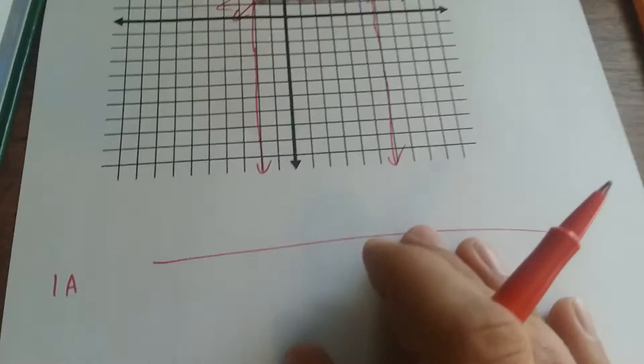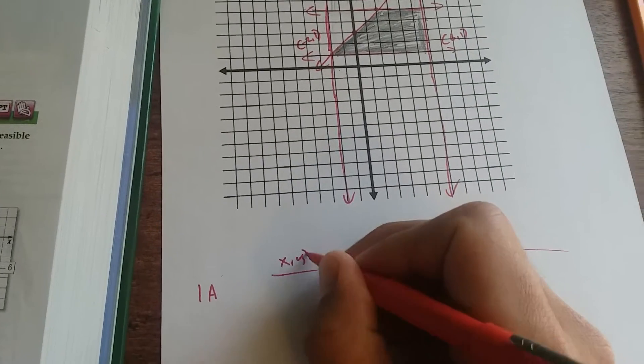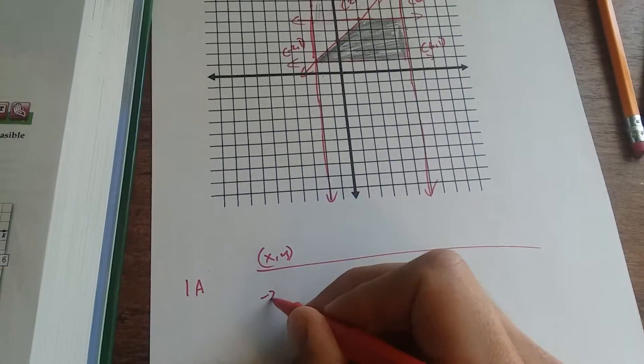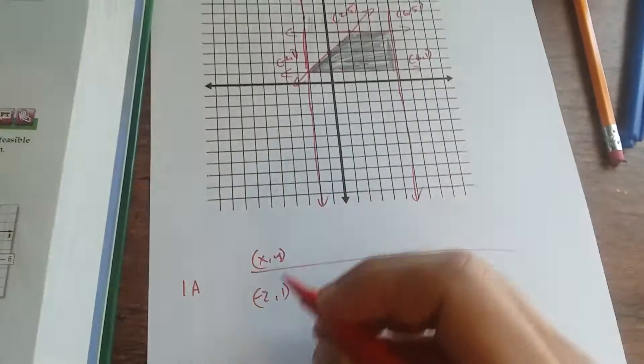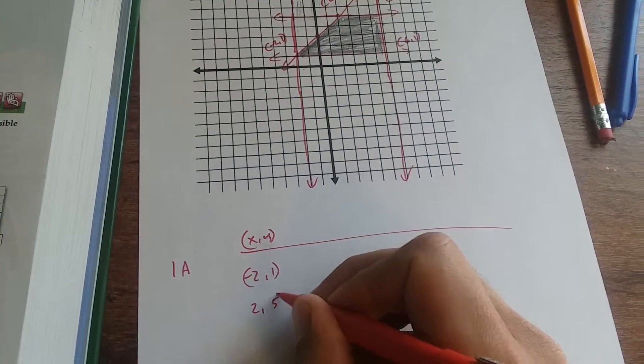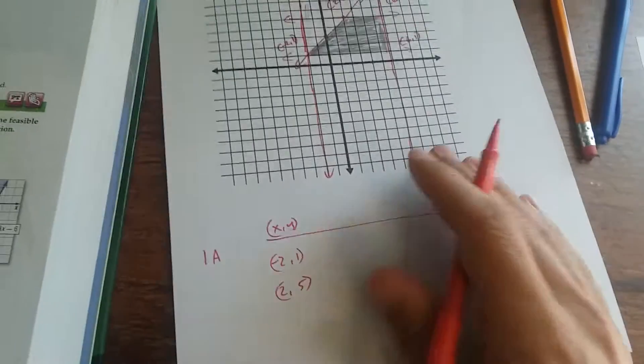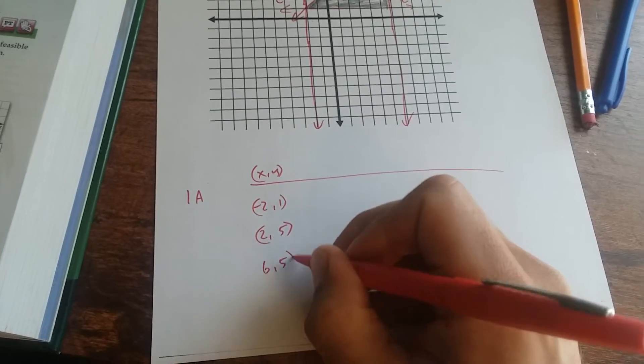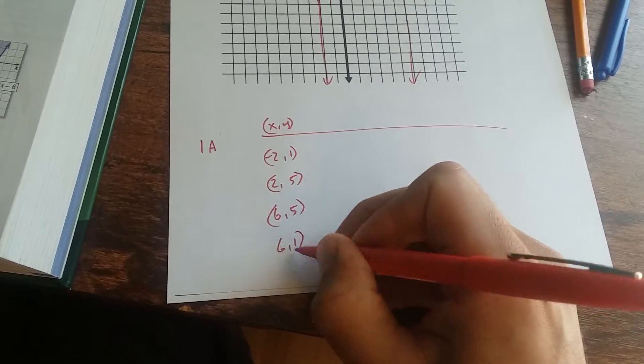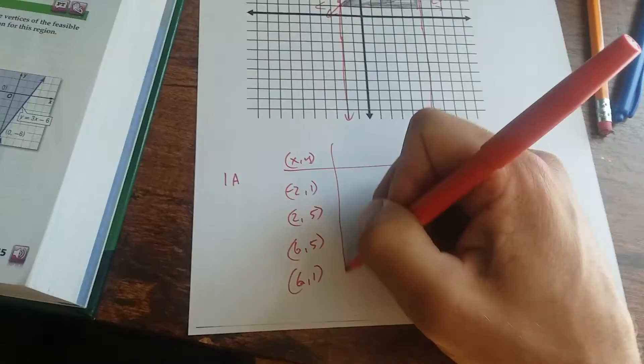So you have your x, y coordinates. We've got negative 2, 1. We've got 2, 5. 6, 5. And 6, 1.